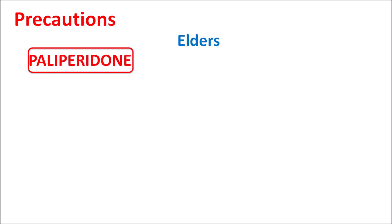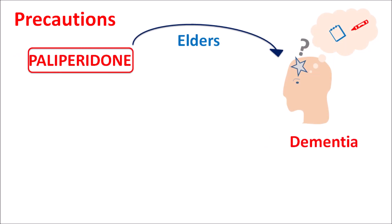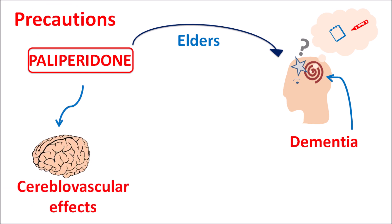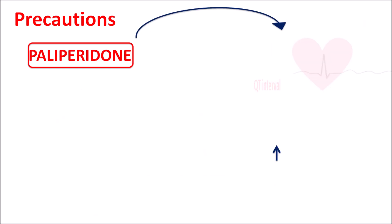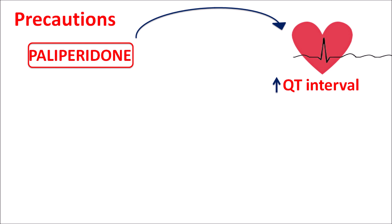Regarding precautions: when given to elderly patients suffering from dementia-related psychosis, paliperidone can produce cerebrovascular effects, increasing the risk of stroke, cerebral ischemia, and even death. This drug should therefore be used carefully in such patients. Additionally, this drug can increase the QT interval on the ECG, potentially producing cardiac arrhythmias.